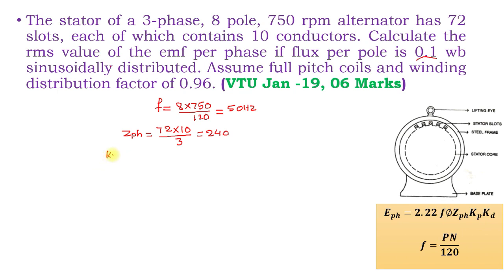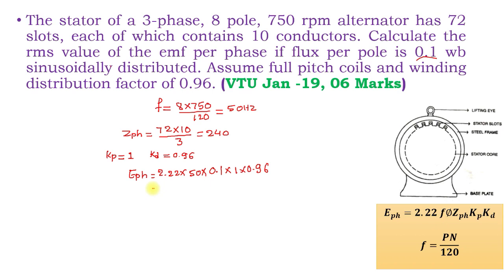Kp is the pitch factor. This problem clearly states full pitch, and full pitch always means Kp = 1. Even if the data is not mentioned, assume Kp = 1. Kd, the distribution factor or winding factor, is 0.96. Then EPH = 2.22 × 50 × flux (0.1 Weber) × Kp (1) × Kd (0.96) = 2557.44 volts.